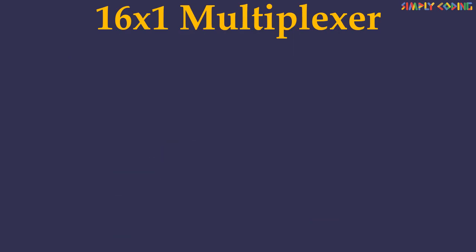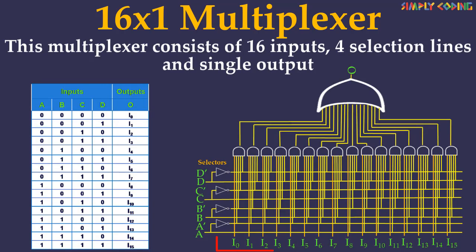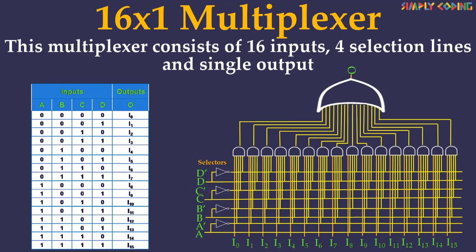Now we will look at the 16-to-1 multiplexer. In the 16-to-1 multiplexer, there are a total of 16 inputs I0 to I15, and 4 selection lines A, B, C and D, and a single output O. On the basis of the combination of inputs present in the selection lines A, B, C and D, one of the 16 inputs will be connected to the output. The block diagram and truth table of the 16-to-1 multiplexer is as shown.